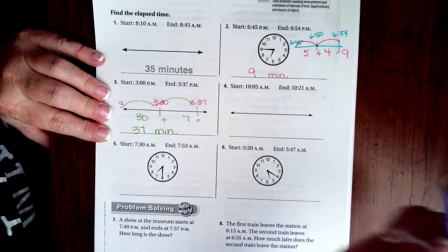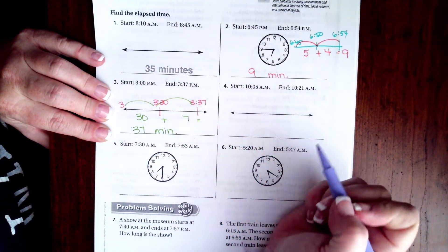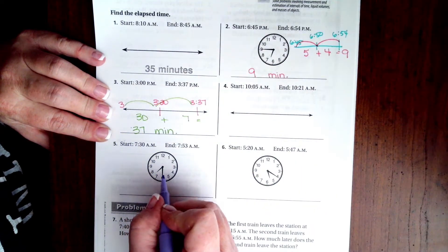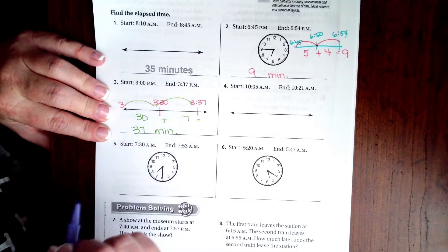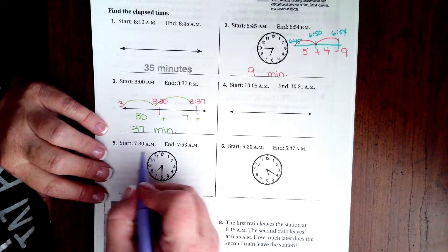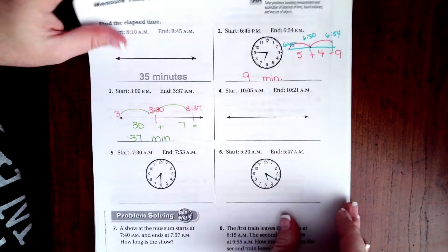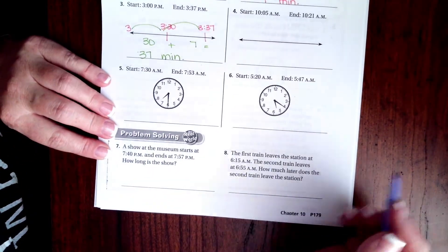You guys go ahead and do four through six. This is the same thing guys, you just gotta read up here to tell you what the times are and then you can totally do a number line right on the side. We're going to go down and do number seven.